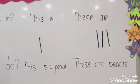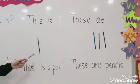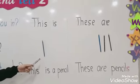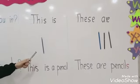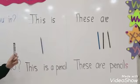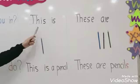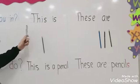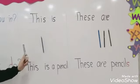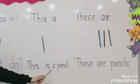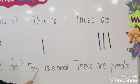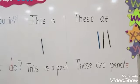Okay KG, look at the board. How many pencils do I have here? One pencil. When I am talking about one thing, I say, this is. So, this is a pencil. This is a pencil.